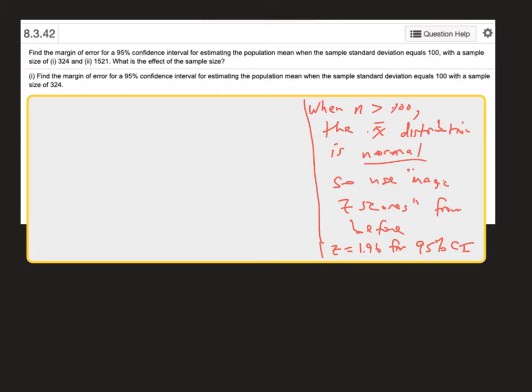So the takeaway here is that when the sample size is large, there's no difference between using t-scores and z-scores, and so we can just resort back to the magic z-scores we were using before. So those are the two things that are odd about this question.